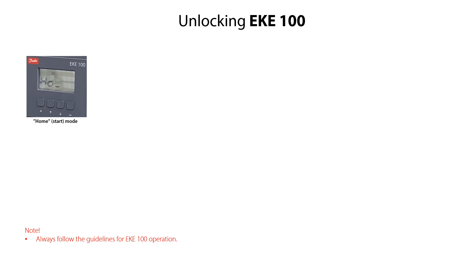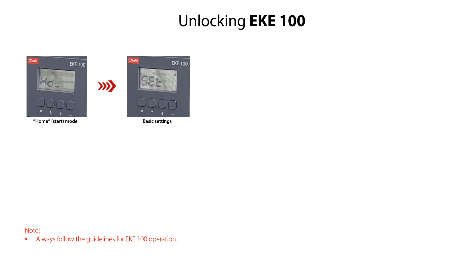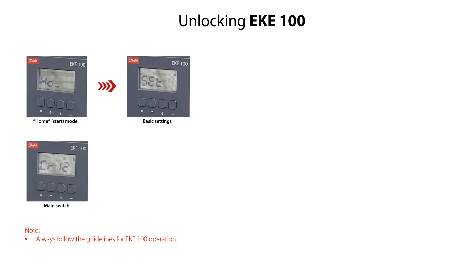The basic usage of the EKE100 display interface is explained in configuration video 1. As mentioned in that video, the EKE100 always starts in home mode, as shown here with 8.0. Before you can configure the EKE100, you firstly need to unlock it. From the home mode, press the arrow down key to get to the basic settings, specified as SET. Press the enter key to access the main switch, specified as CR12.